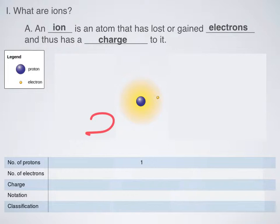So what are ions? An ion is simply an atom that has either lost or gained electrons, and so it has a charge to it.